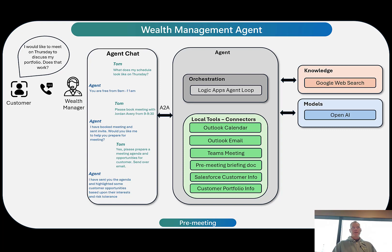We've got a customer who would like to book a meeting with their wealth manager. That customer naturally has information across several different systems, and the wealth manager wants to manage that process more effectively. So what we're going to do is build an agent in Azure Logic Apps using the conversational capabilities we've recently introduced to help orchestrate this process. Let's look at some of the tools we're going to take advantage of.